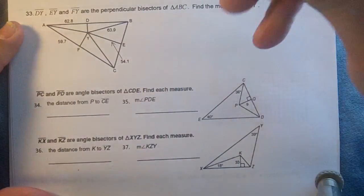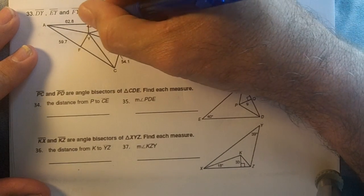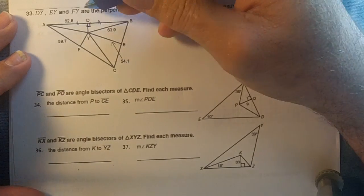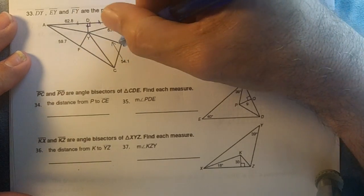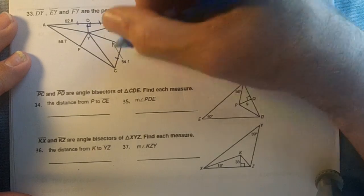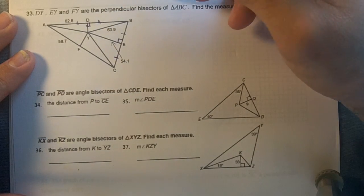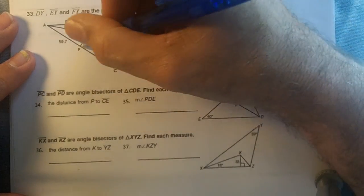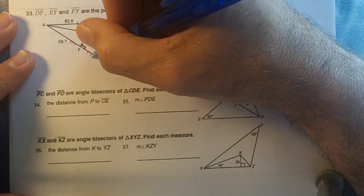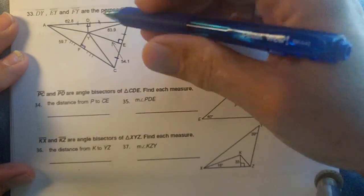So DY, this is perpendicular and this side is equal to that side. EY is right here, this is perpendicular, this side is equal to this side. And FY is right here, this side is perpendicular, this side is equal to this side.